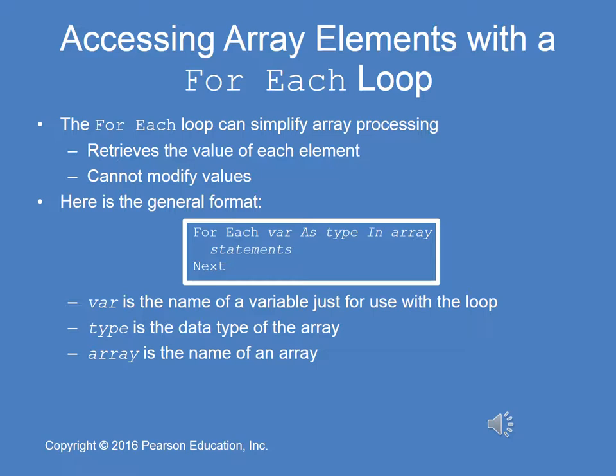Next, we're going to see how we can access array elements with a for each loop. The for each loop simplifies array processing. It retrieves the value of each element, but it cannot modify the values. Here we have the general format of the for each loop: var is the name of the variable just for use with the loop, type is the data type of the array, and array is the name of an array.